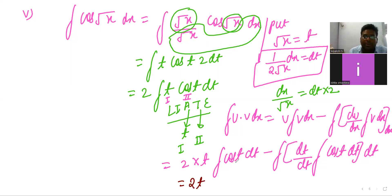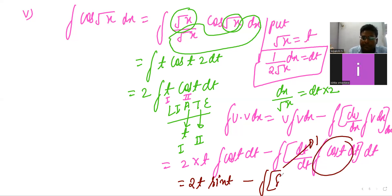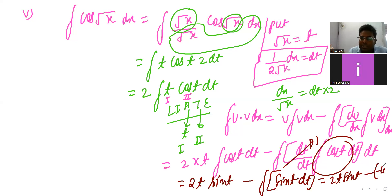So it is 2: t times cos integration is sin(t), minus — differentiation of t is 1 — remaining is integration of sin(t) dt. Integration of sin is minus cos(t), so it becomes plus cos(t). The answer is 2[t·sin(t) + cos(t)] + C.